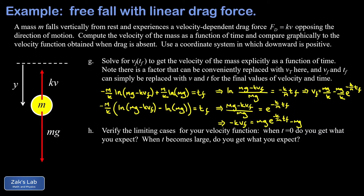Here's where we clean up the answer. Remember that mg over k is the terminal velocity, so I replace mg/k with v_t and factor it out. Also, now that the integrals are computed, I don't need the distinction between v_final and v, or t_final and t. The final clean answer is: v equals v_t times the quantity one minus e to the negative k over m times t.